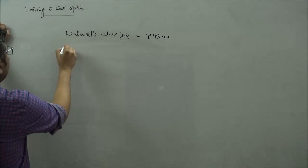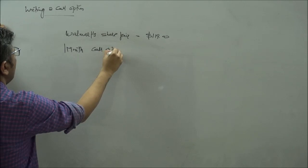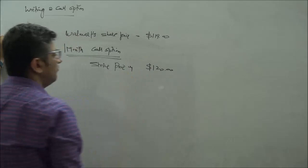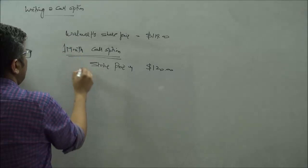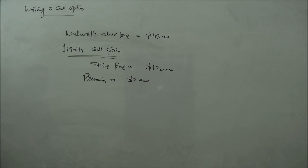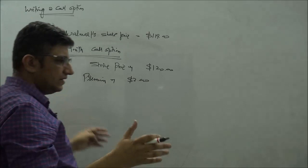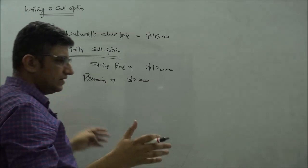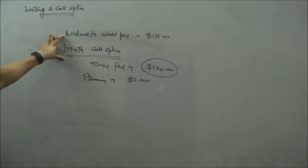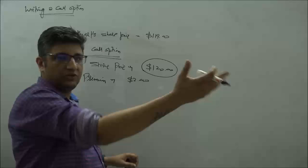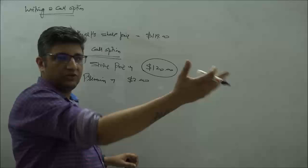I have one month call option where the strike price is $120, and the premium for that is $2 here. So the whole point is that if I'm writing this call option, essentially I'm telling that option holder that look, I'm willing to sell you this share at $120 a month from now, up to you whether you want to kind of buy it or not. So the choice lies with you, the option lies with you.